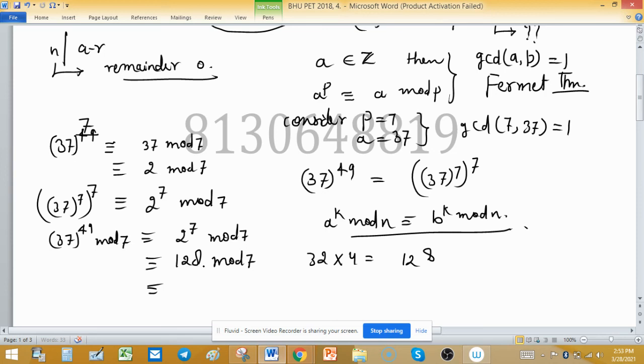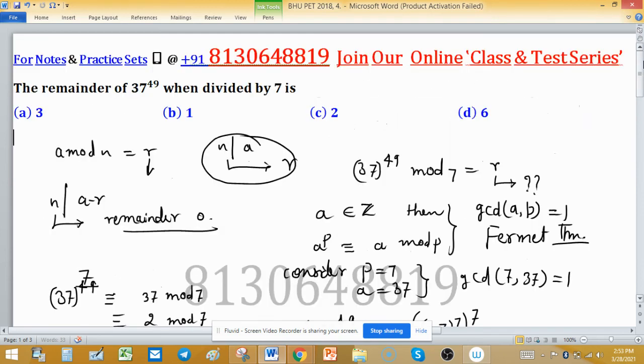7 times 18 is 126, so 128 is 2 mod 7. Means 2 is the remainder. Which option is giving the value 2? Option C.